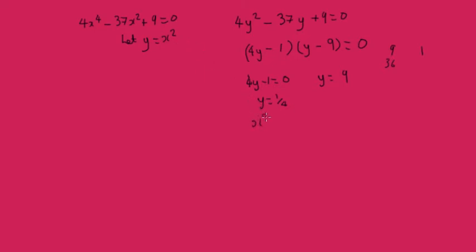So if we take the square root, we're going to get plus or minus 1 half. Or x squared must be 9. So x must be plus or minus 3. So here we've got, because it's a power of 4, we're going to have 4 solutions for this quadratic equation.